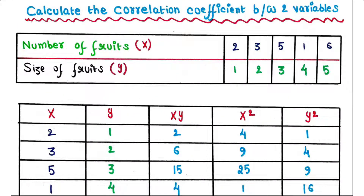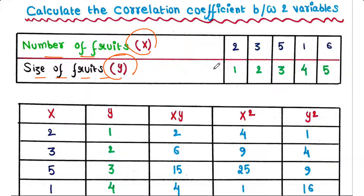After our experiment we want to calculate the correlation coefficient between two variables. In our case, the first variable is number of fruits (x) and the second variable is size of fruits (y). Y could have any unit — centimeter, millimeter, etc. We have taken data five times, that means from five trees.